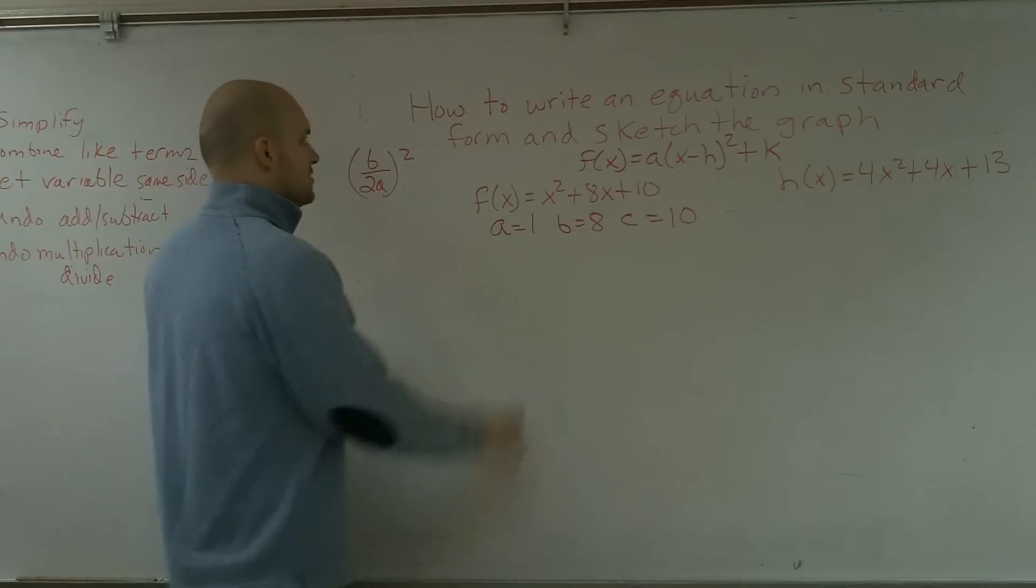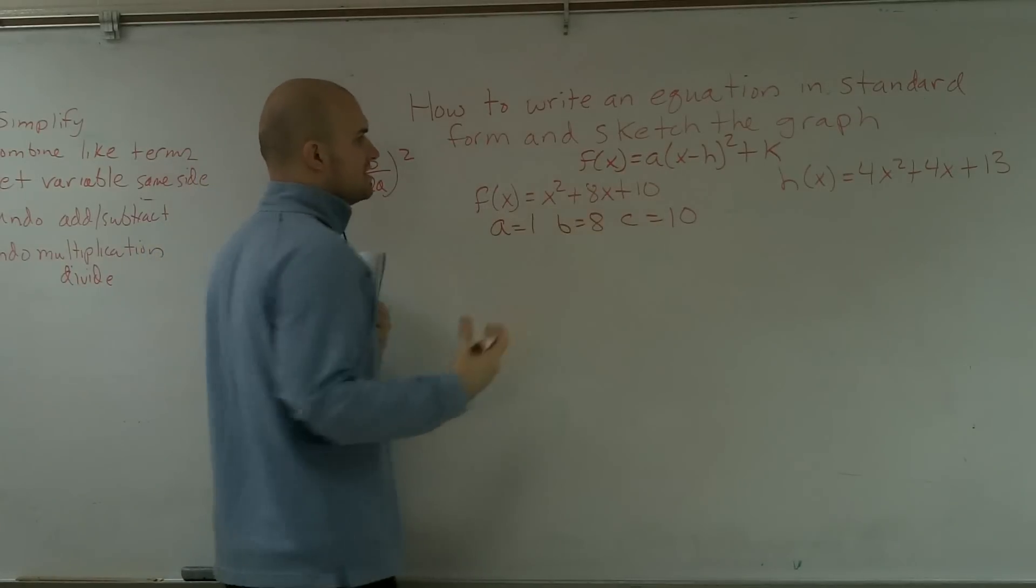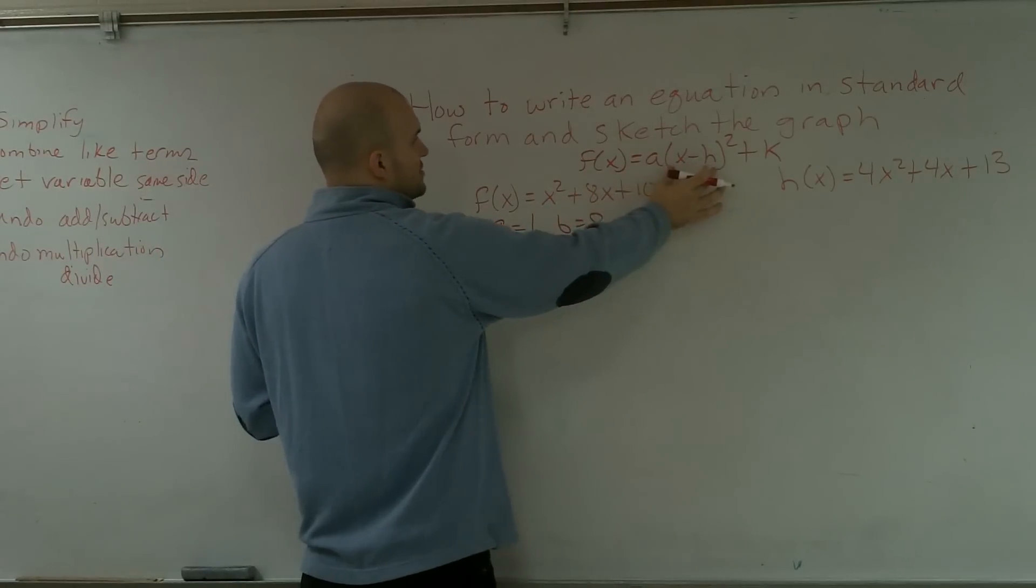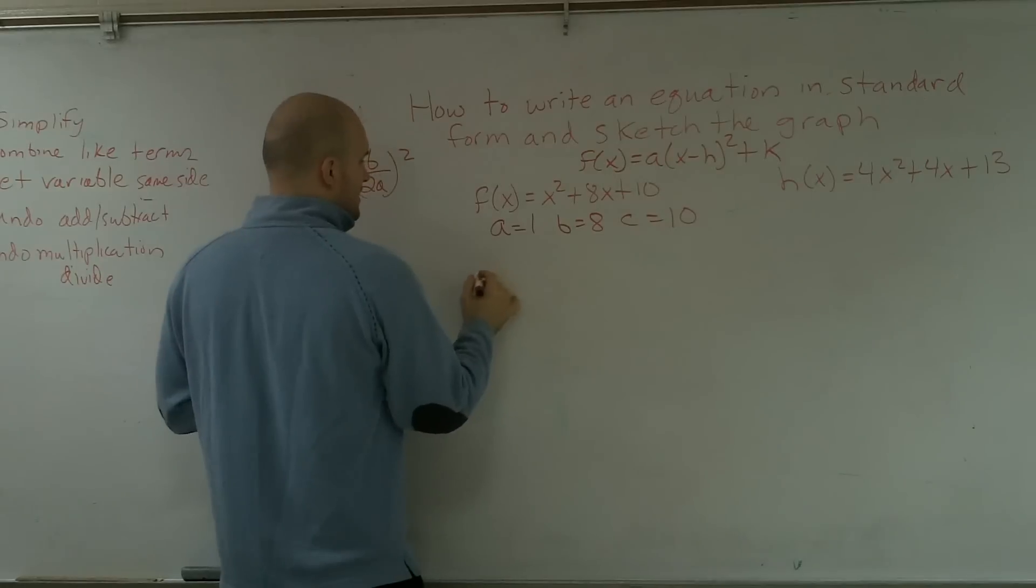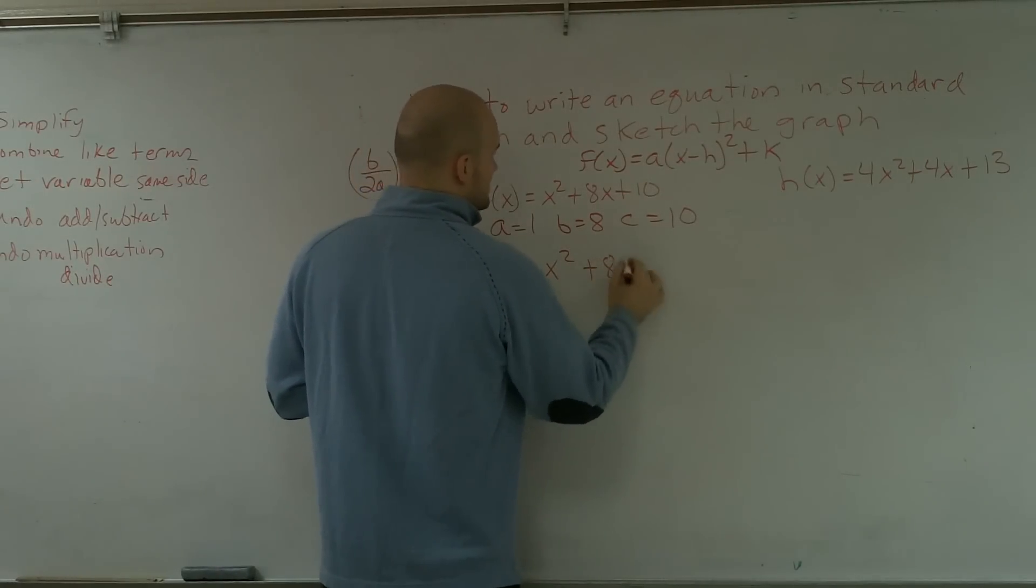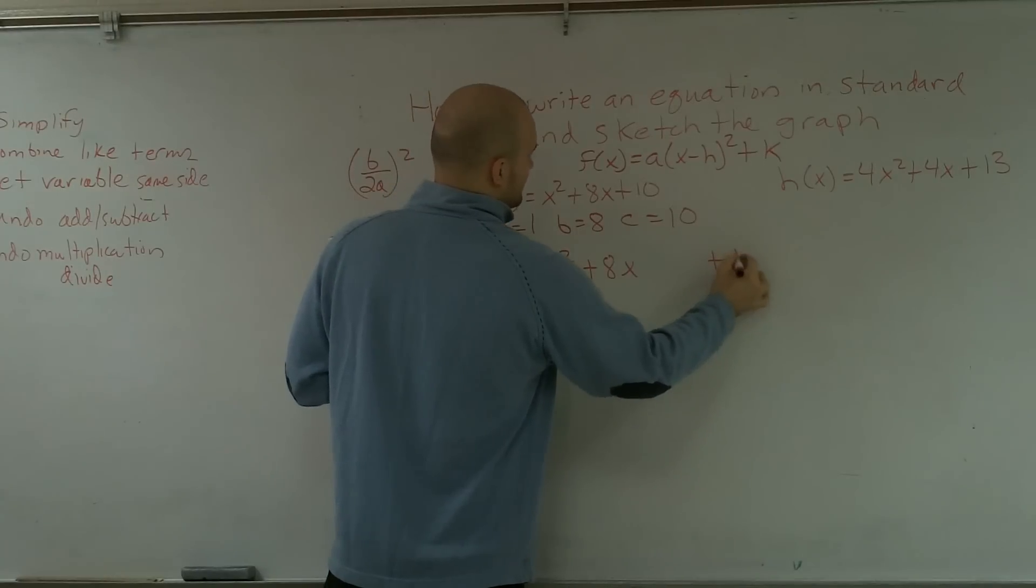All right? Now what I need to do is I need to split this up. I'm going to get this portion into my perfect square. So I'm going to write f of x equals x squared plus 8x, and I'm going to put the plus 10 over here.